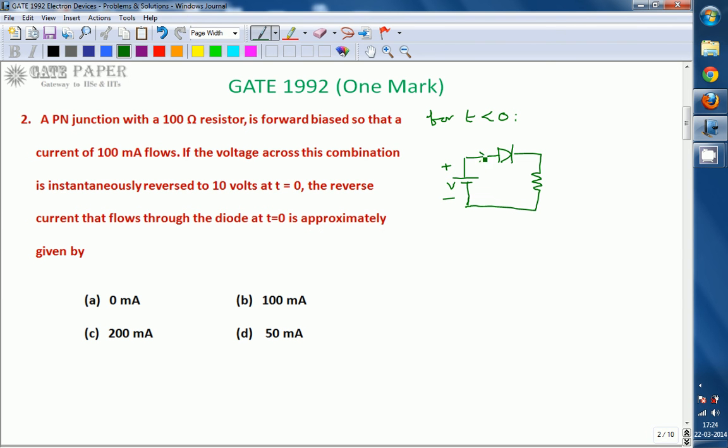By that time, the current that is flowing is 100 mA. 100 mA forward current is flowing from P to N and the resistor value is 100 ohms.